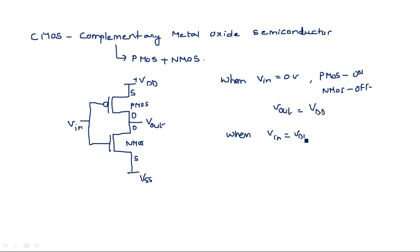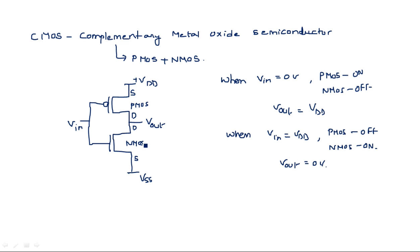When input is equal to 5 volts or VDD, the PMOS transistor is in off state and the NMOS transistor is in on state. As the NMOS transistor is in on state, there is a direct connection between the output and ground, so output goes to zero volts. This means NMOS pulls the output down, which is why it is called the pull-down transistor. Since input zero gives output VDD and input VDD gives output zero, it is called a CMOS inverter.